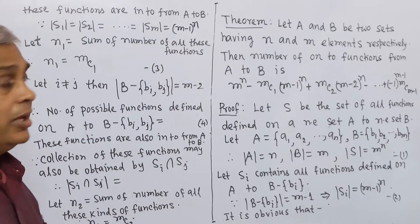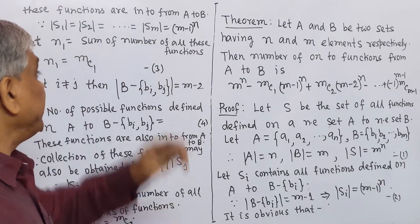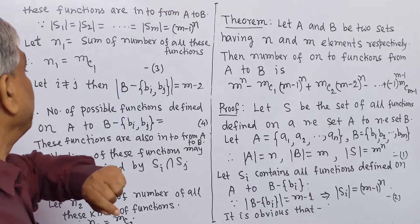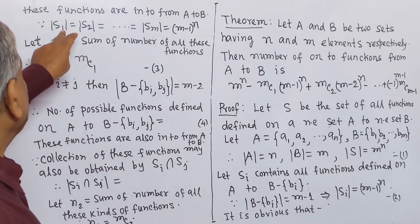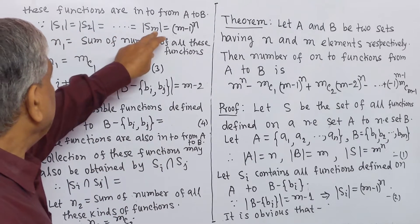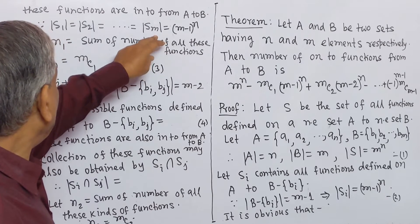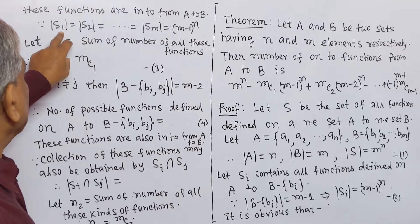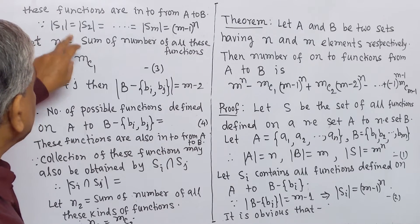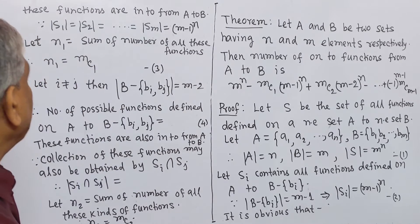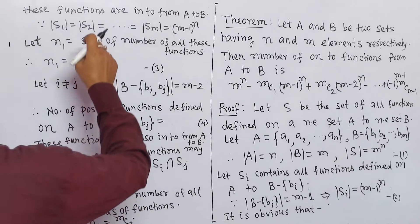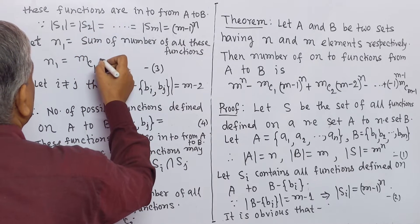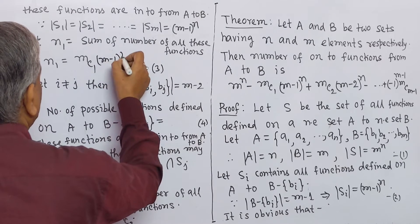Since the number of elements in S1, S2, ..., SM are all the same, that is equal to (m-1) to the power n, let N1 be the sum of all these functions. The number of such sets is m. So, we may write N1 = mC1 multiplied by (m-1) to the power n.